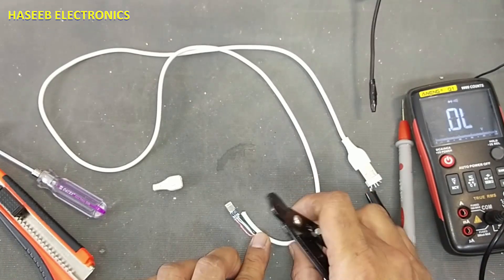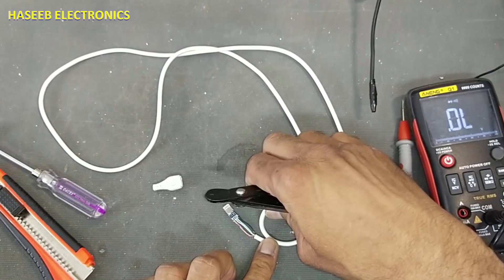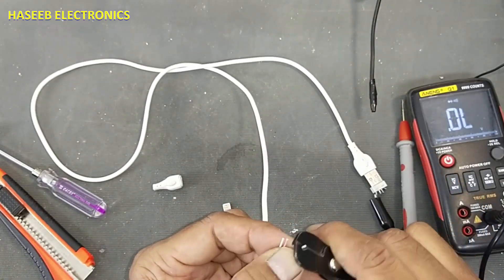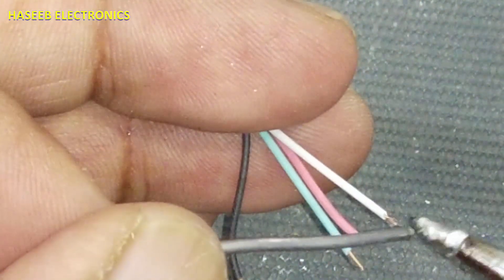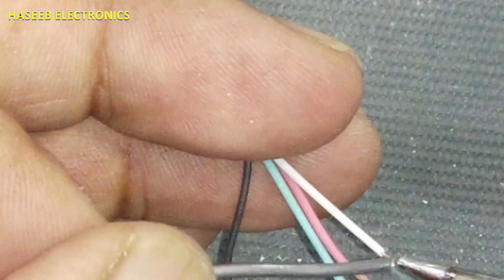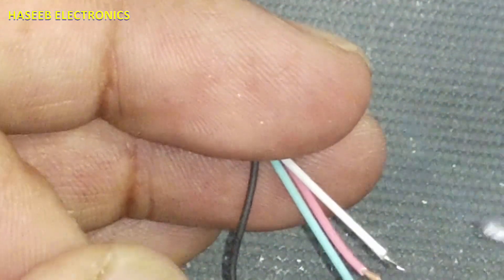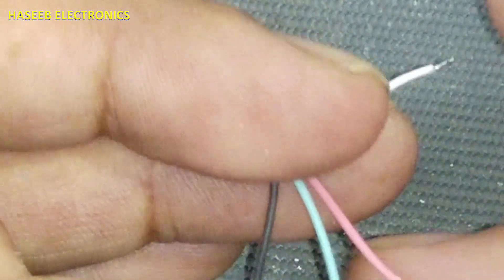Remove insulation at the same length that is here. Remove insulation from every wire. Make good tinning. I am using the flux filled solder wire, so I am not using the flux. If you are using simple solder wire, at that time you will need to use flux solder paste.